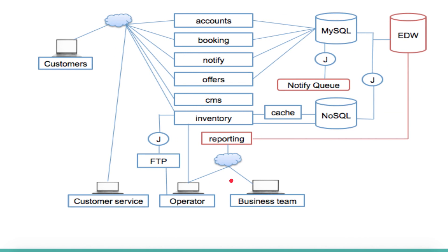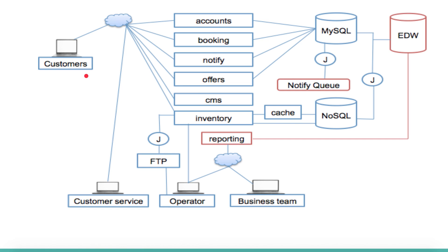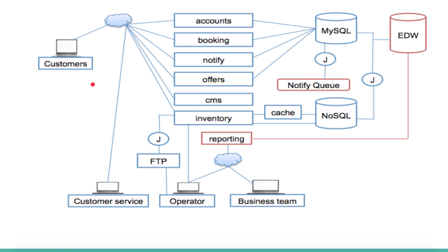Next I want to talk about the complete infrastructure of the online bus ticket booking system. If you look at the system, the four key players interacting in it are: customers, customer service, operators, and the business team. Customers are the public and they need full facility to operate and to book a ticket.